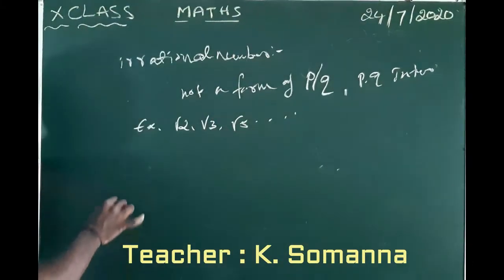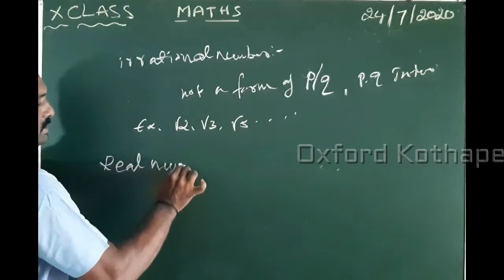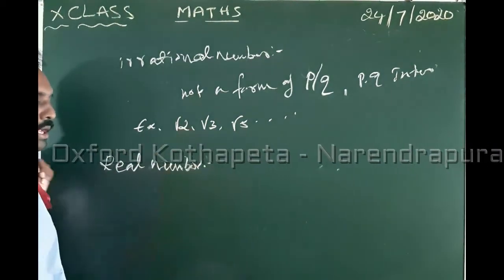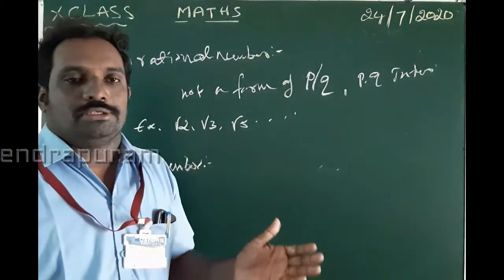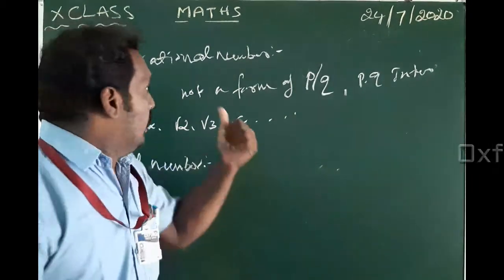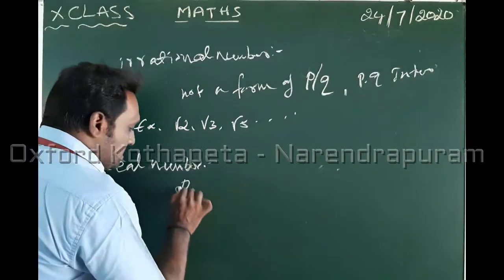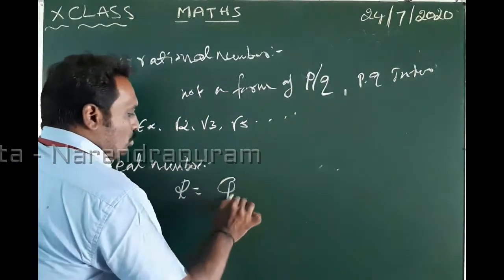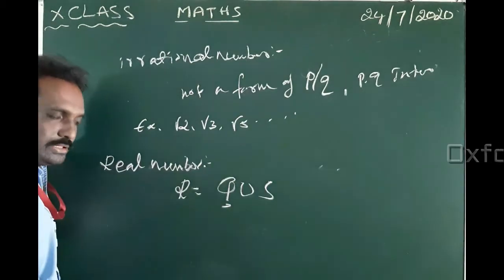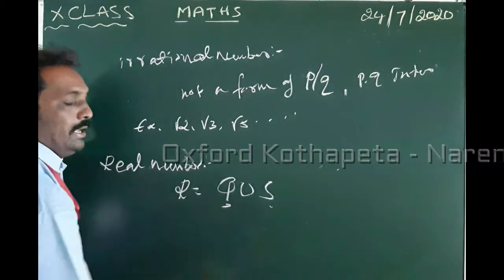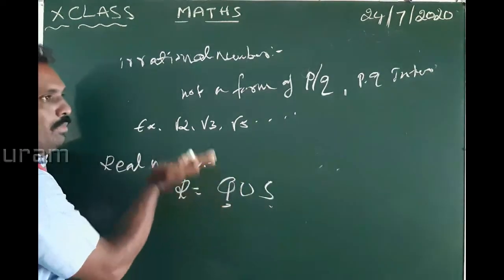The most important is real numbers. Real numbers consist of rational numbers and irrational numbers together. R = Q union S, where Q means rational numbers and S means irrational numbers. The set of all numbers together is called real numbers.